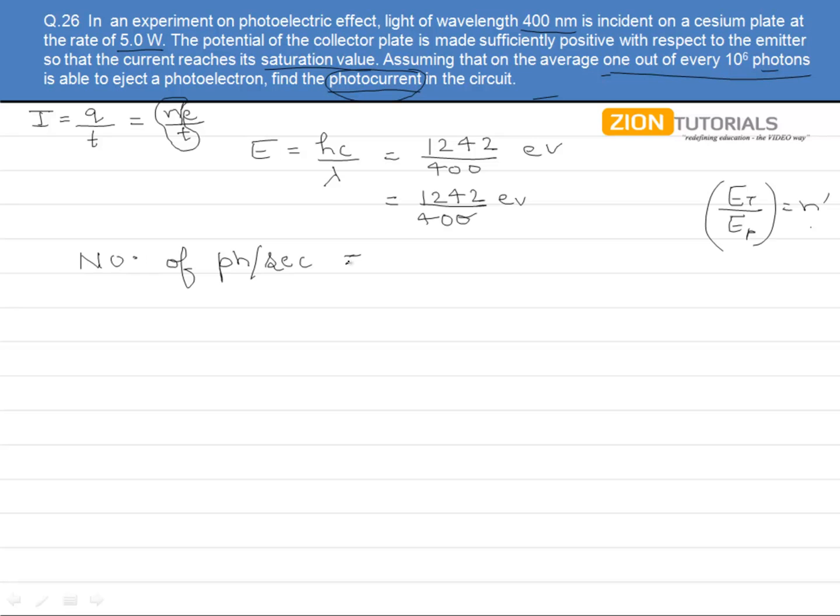Basically what I am doing is dividing the power, which is 5, by whatever this energy of each electron is.